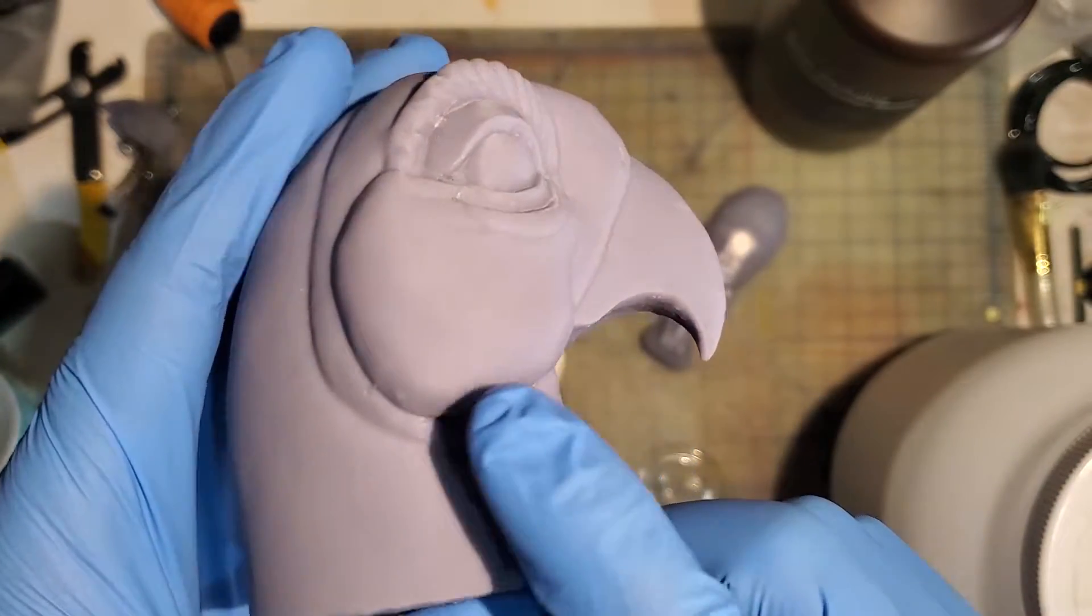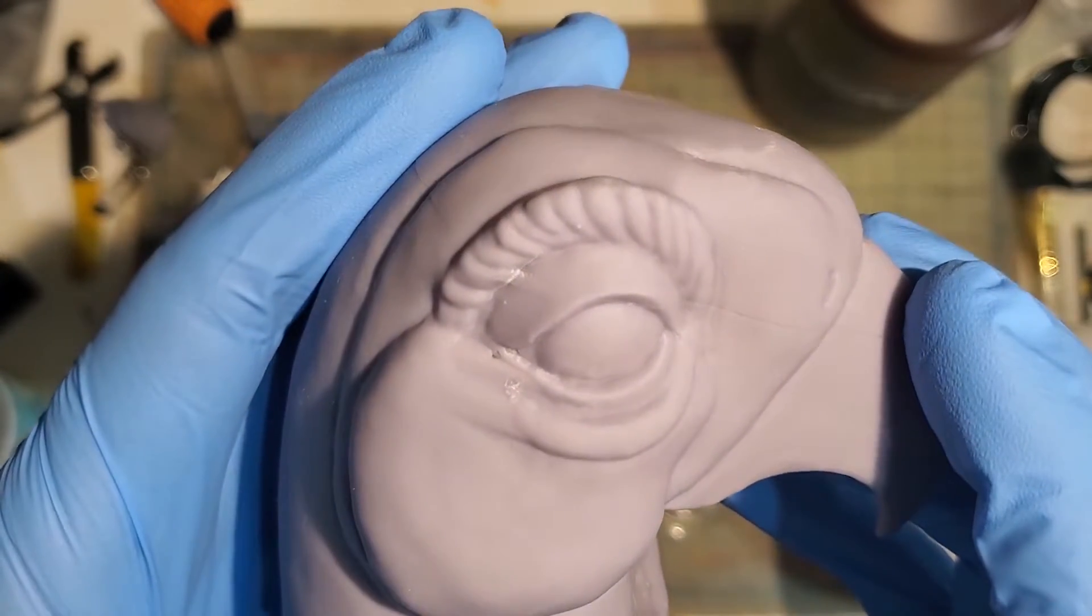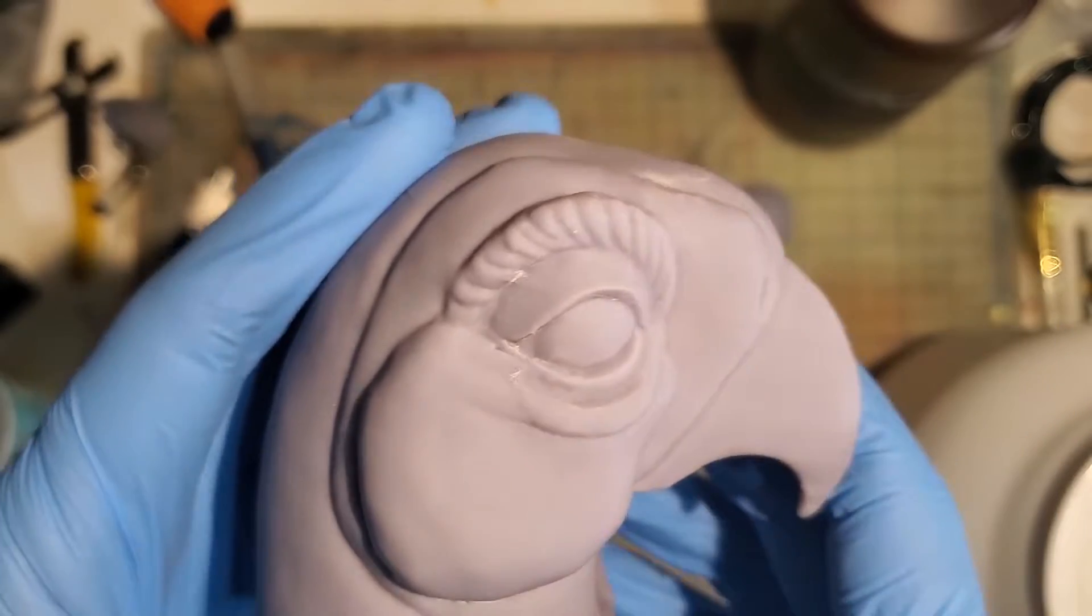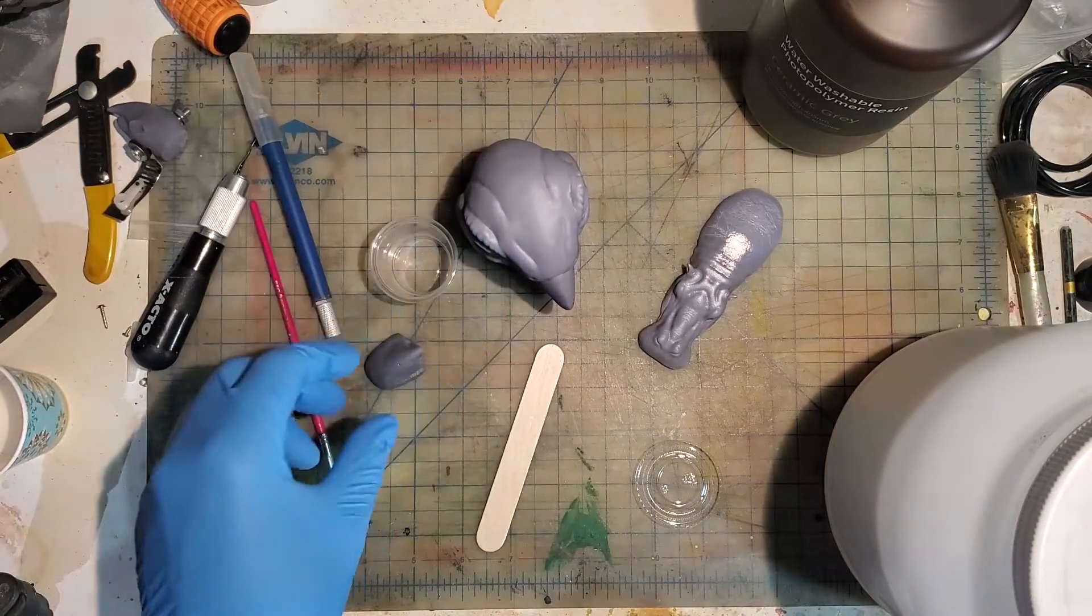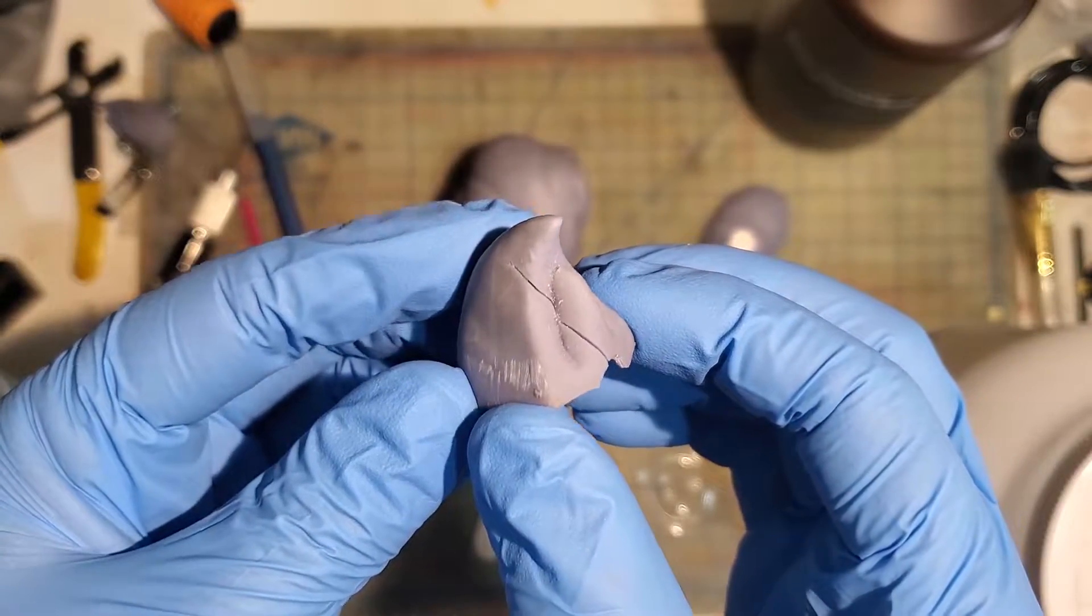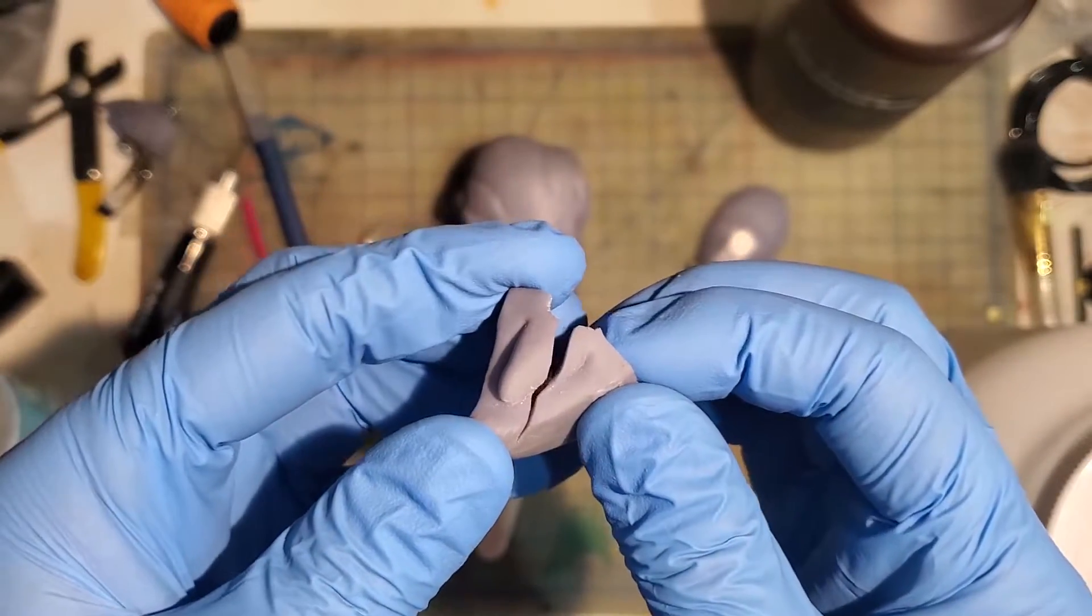In this bird head print, I had some pitting left over by the supports, as well as some scratches from where I was a little heavy handed with my exacto blade. For this lower beak part, there was a large crack going down the center from when I tried to drill it. The crack is pretty obvious, and it makes the part structurally weak.